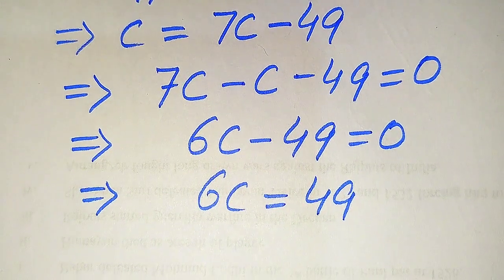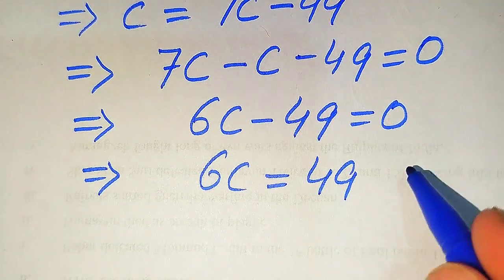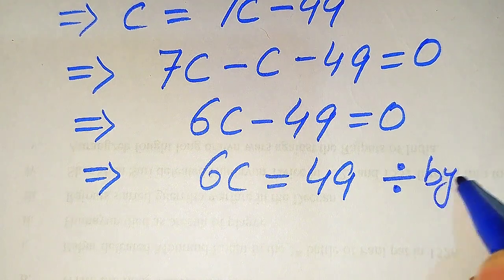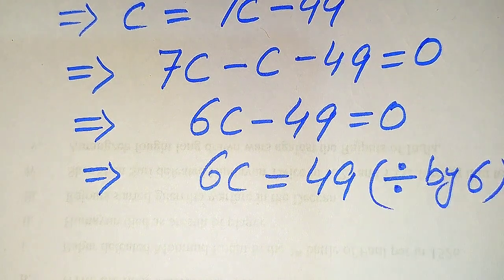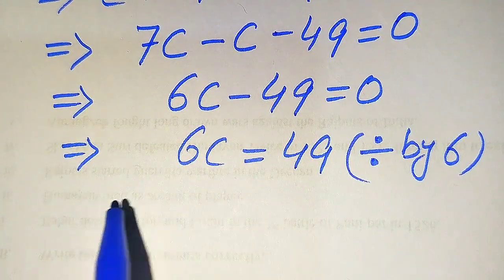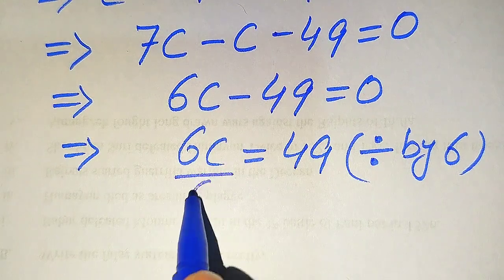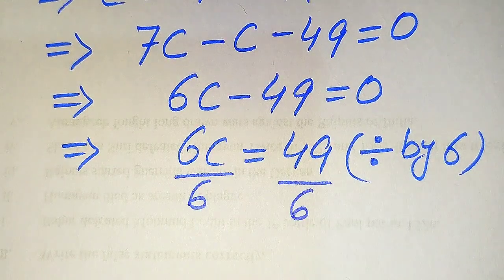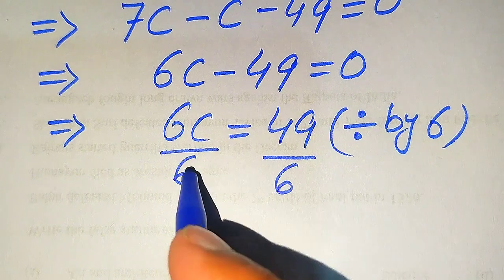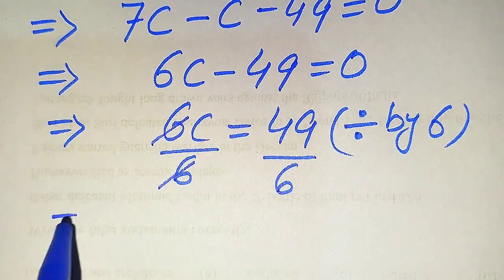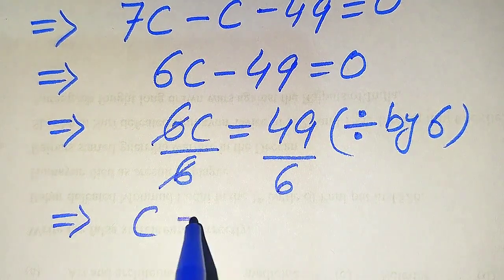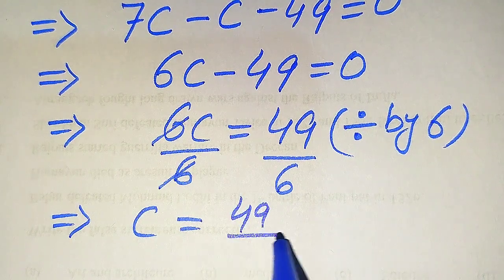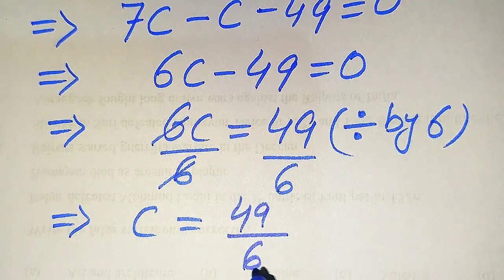To find the value of C, we divide both sides by 6. The 6 cancels on the left side and we get C equals 49 divided by 6.